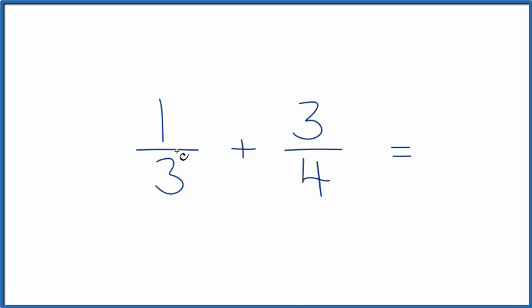So first off, when we're adding fractions, we need to get the denominator here, the number on the bottom, to be the same, a common denominator. What I could do is I know that both 3 and 4 go into 12.